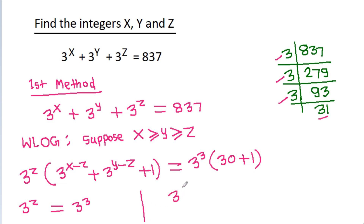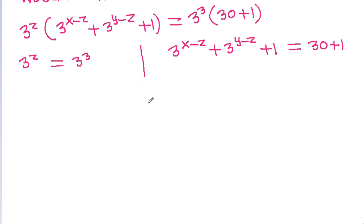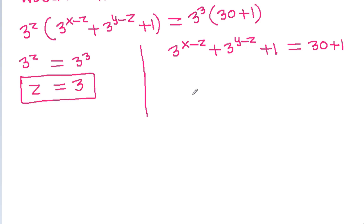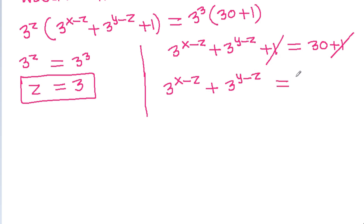And 3 power (x minus g) plus 3 power (y minus g) plus 1 will be equal to 30 plus 1. From here, g will be equal to 3, and the 1s cancel.